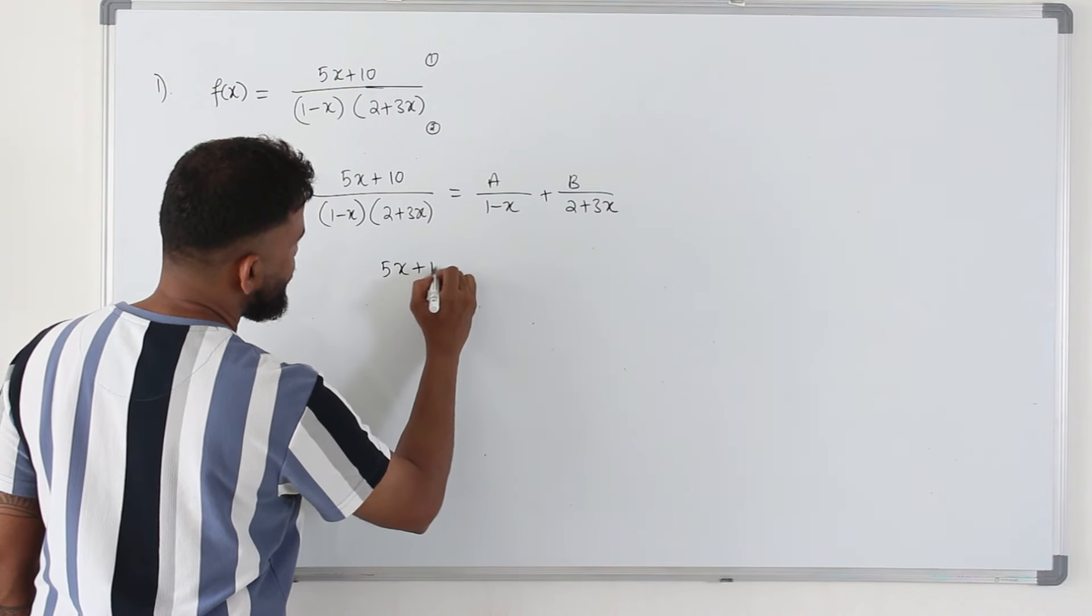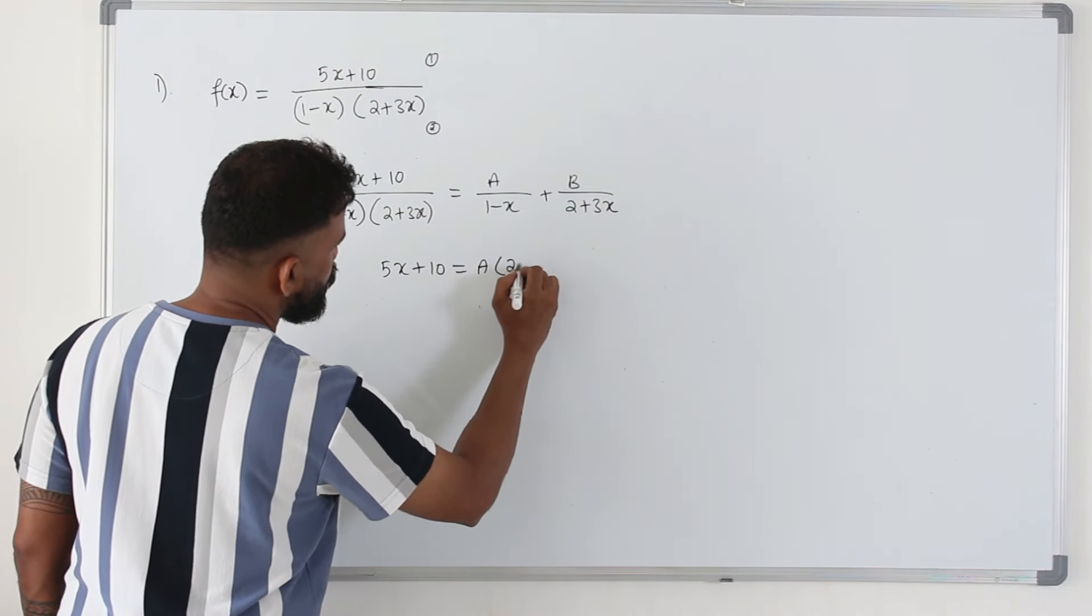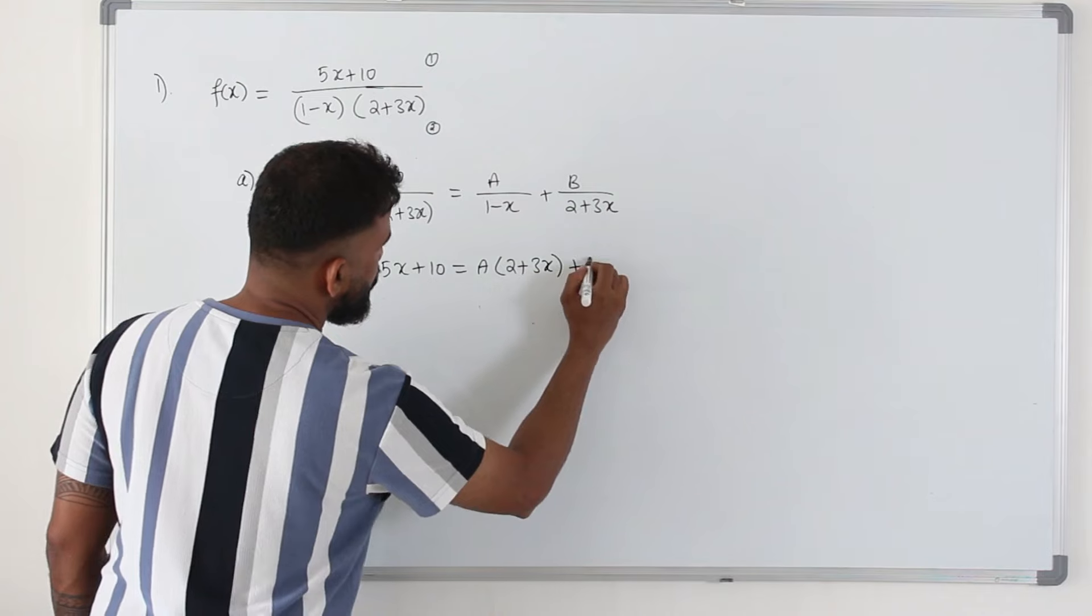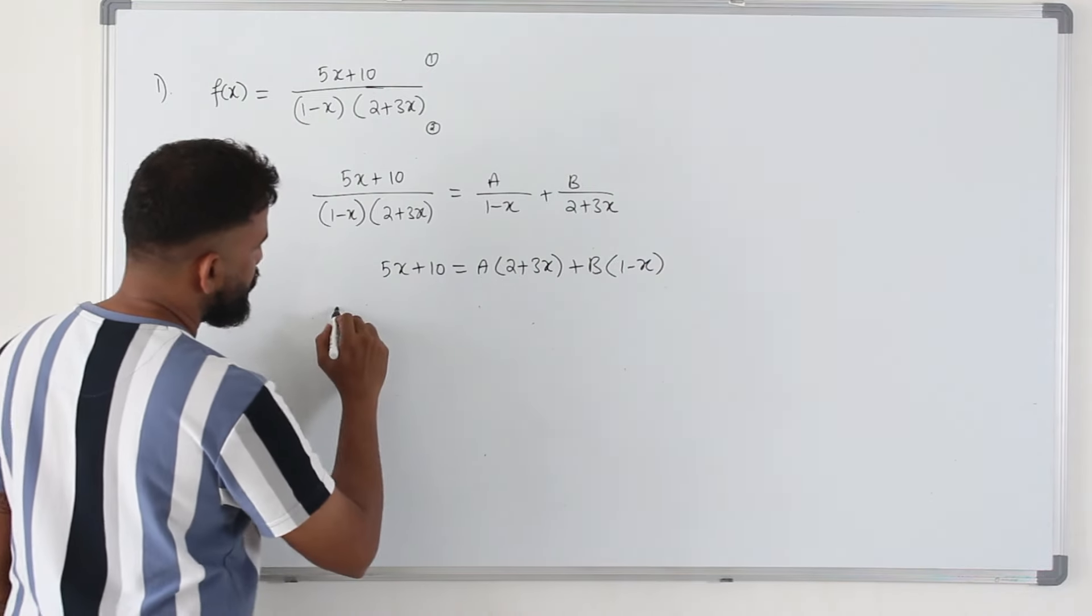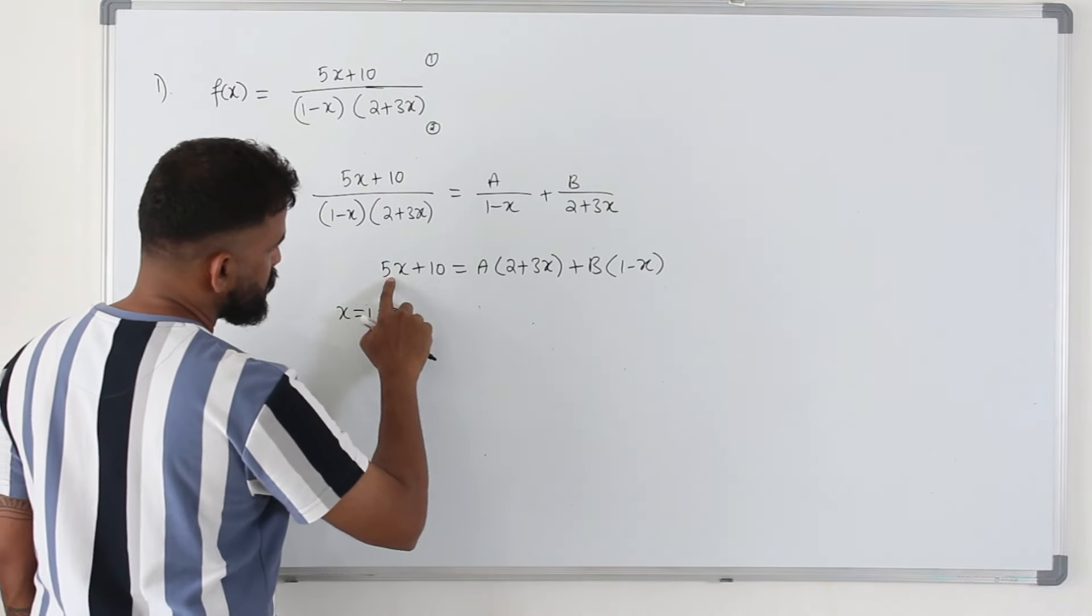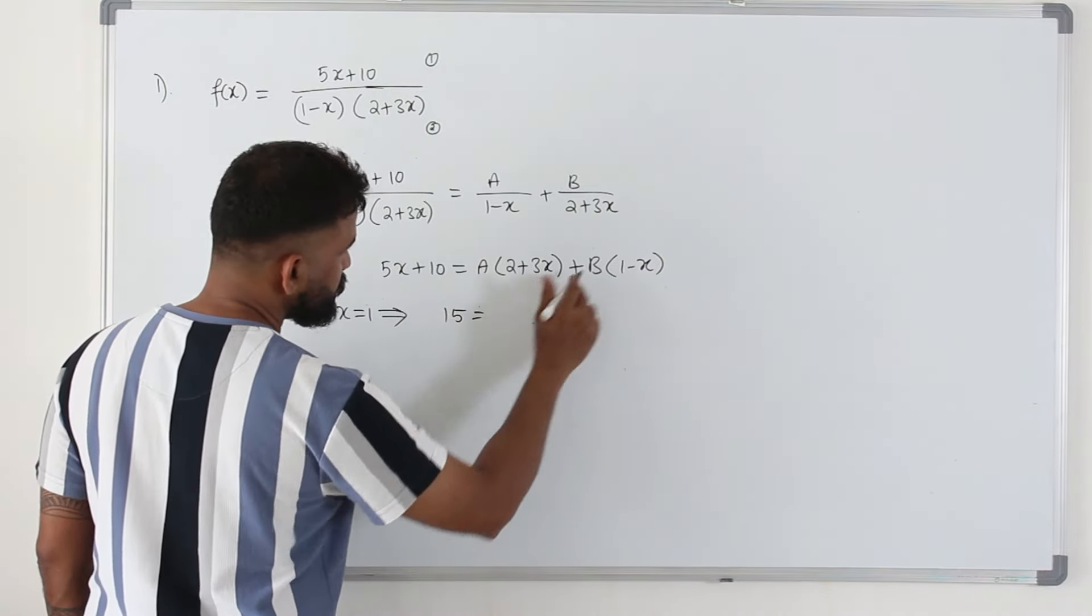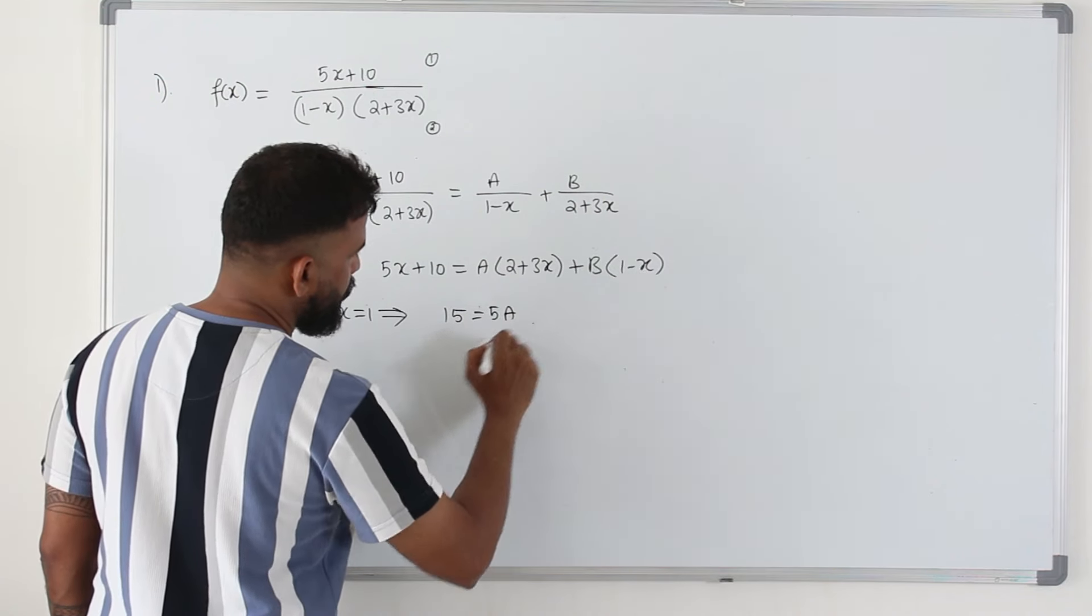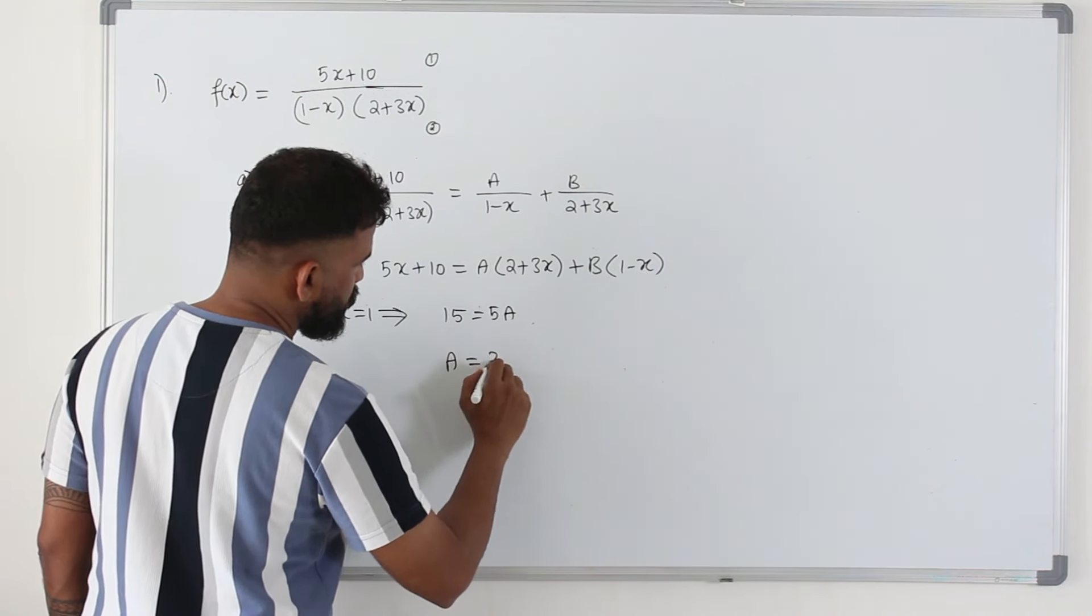You will get 5x plus 10 is equal to a times 2 plus 3x, b times 1 minus x. Replace x by 1. So we get 15 is, this becomes 0, 5a. So a is 3.